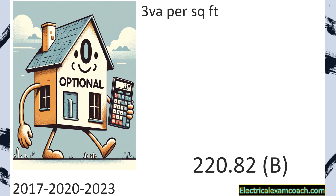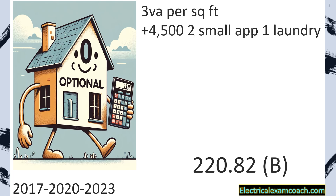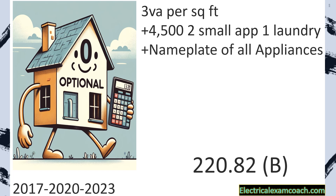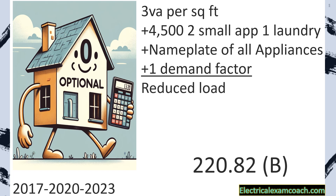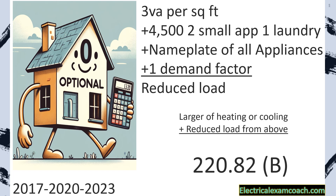We're still going to do our three VAs per square foot and our 4,500 VAs for our two small appliance and one laundry circuits. Then we're going to take the nameplate of all appliances and apply one demand factor — that gives us our new reduced load. All we have left to do is total our HVAC, take the larger of heating or cooling, add that back to the reduced load, and we have our total connected load. Let's get to it.